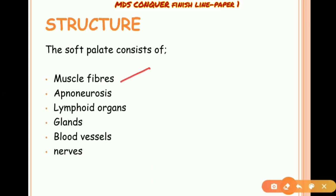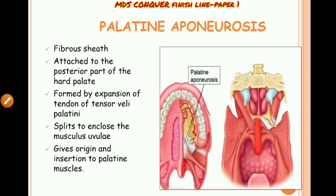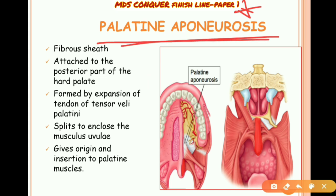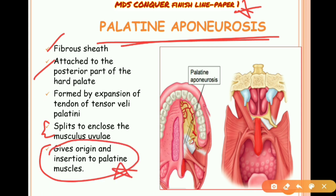Regarding the palatine aponeurosis: this is a fibrous sheet attached to the posterior part of the hard palate. It splits to enclose the musculus uvulae and gives origin and insertion to all the palatine muscles. This structure is very important when answering questions about the palatopharyngeal arch.